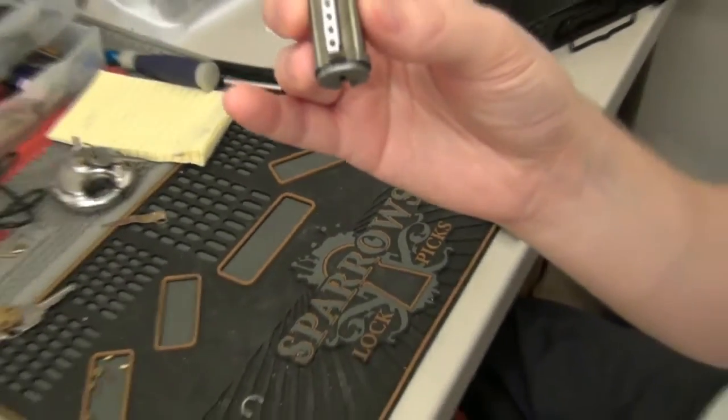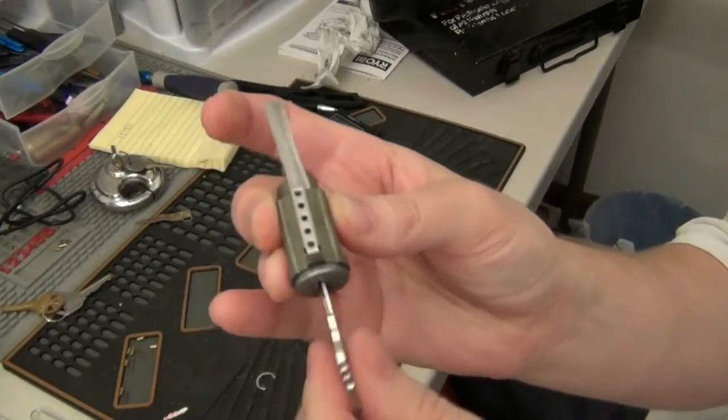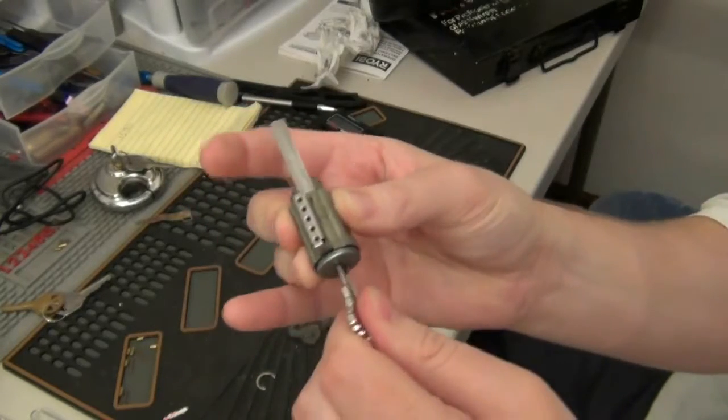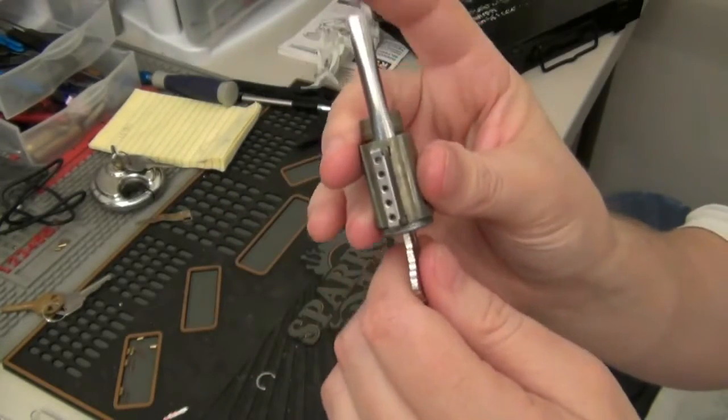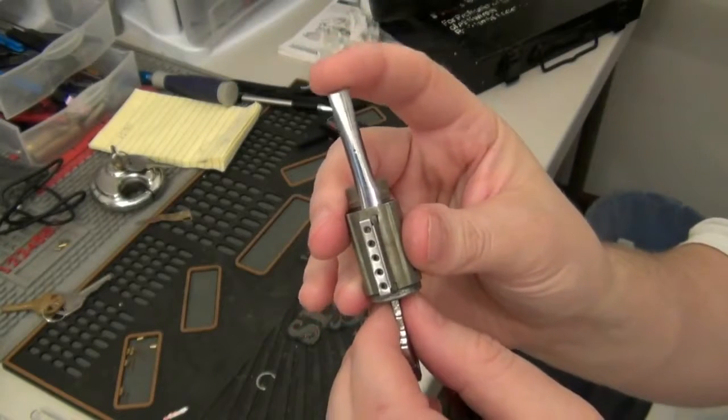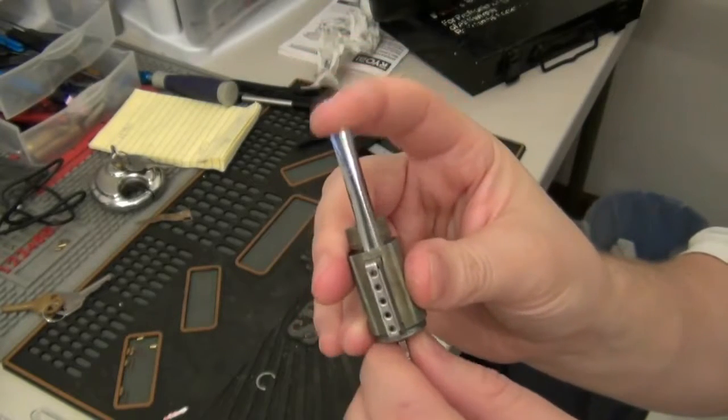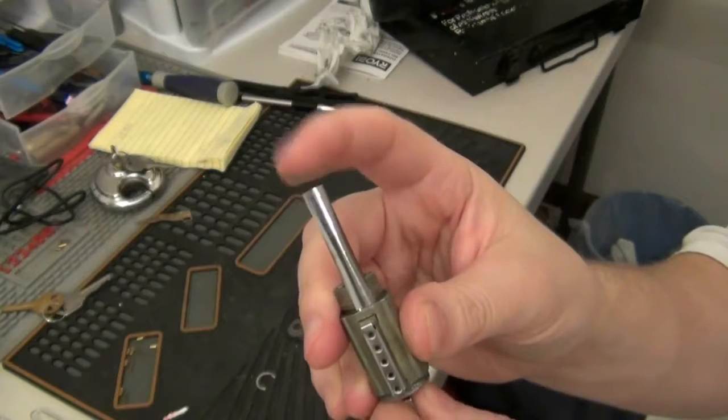Put the key blank in all the way, and then just by tapping the top of the shim, putting a little bit of pressure on it, and then slowly pulling the key blank out.